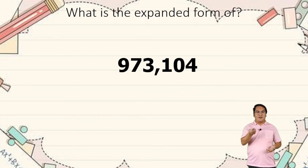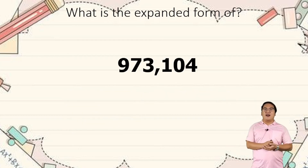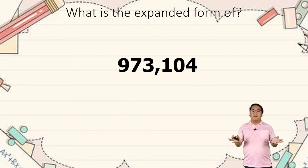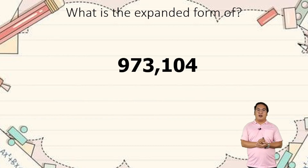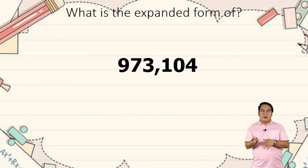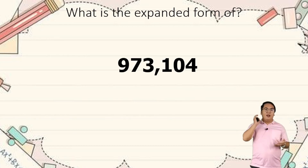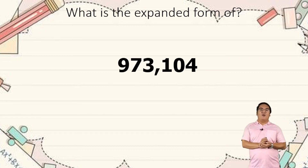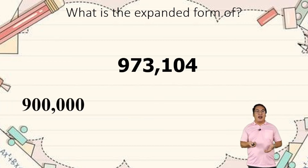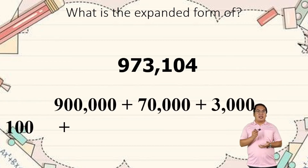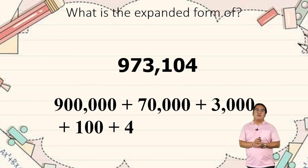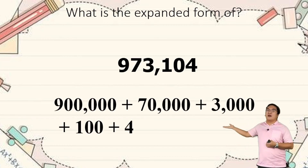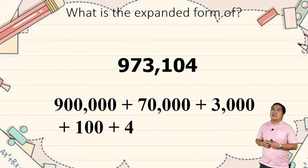How about this one? We have a 100,000-digit number. What is the expanded form of 973,104? We have 900,000 plus 70,000 plus 3,000 plus 100 plus 4. If you look at our screen here, this is the expanded form.